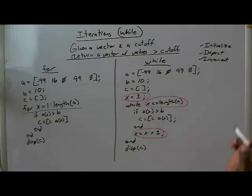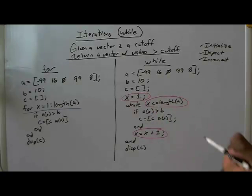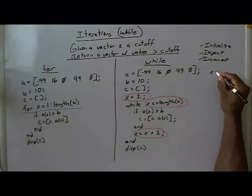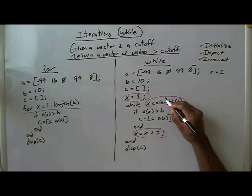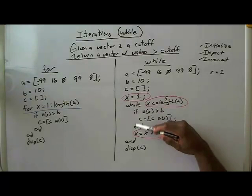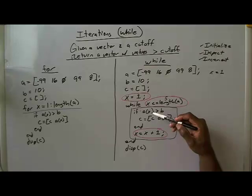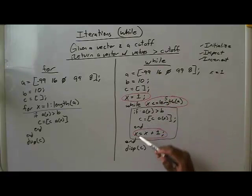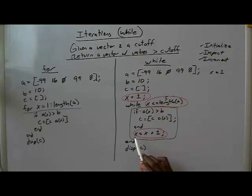Let's trace through this again. A equals the vector, B equals 10, C starts off empty, and x equals 1. While x is less than or equal to the length of A — which is 5 — we enter the loop. We check: is A indexed at 1, which is negative 99, greater than B? No, it's not. So we skip down and increment: x now equals x plus 1, so x becomes 2. We go back to the top — is 2 less than or equal to 5? Yes.